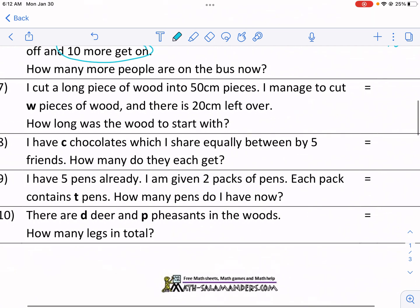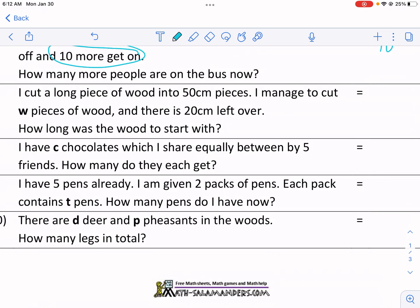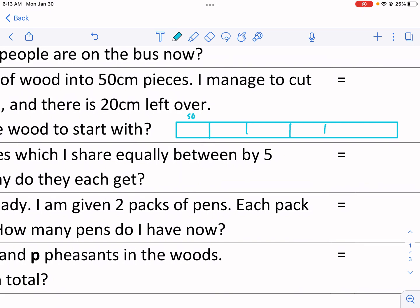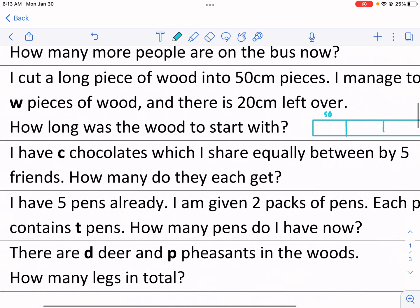Number seven. Almost done here. I cut a long piece of wood into 50 centimeter pieces. So obviously it was much larger than that. I managed to cut W pieces of wood and there's 20 centimeters left over. How long was the wood to start with? So it's always helpful, I think, to kind of think of an example. And obviously you don't use the same numbers. That's a pretty bad piece of wood. Let me make a better piece of wood. But obviously you don't use the numbers. Eventually you're just going to change it to variables. But let's just call these 50 centimeters. We could have a bunch here. But the problem is we don't know exactly how many times we cut. We don't know how many W pieces of wood we have.